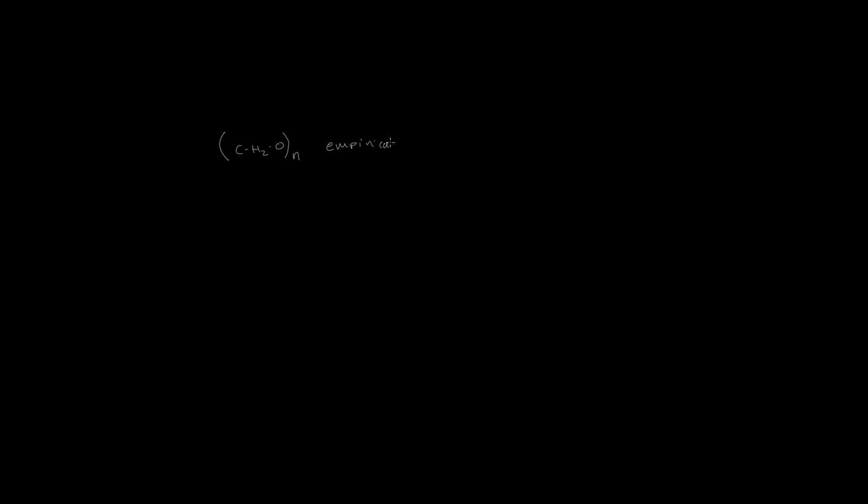Although this is the empirical formula, the simplest monosaccharide consists of 3 carbons, 6 hydrogens, and 3 oxygens. So we basically switch out the N for 3.